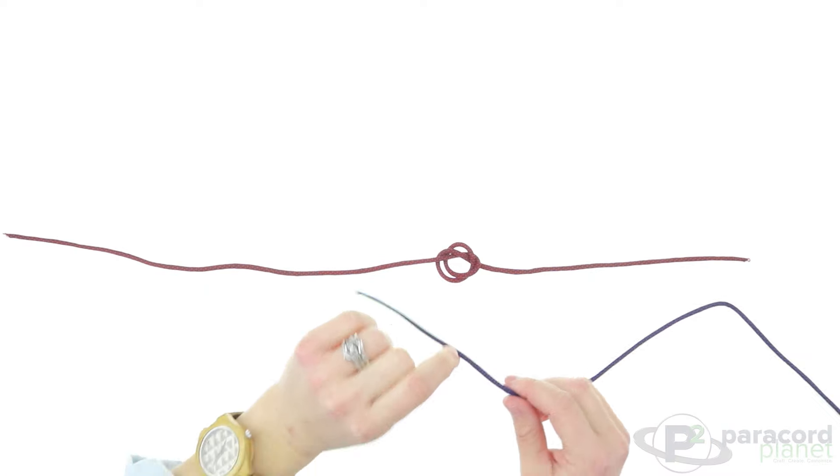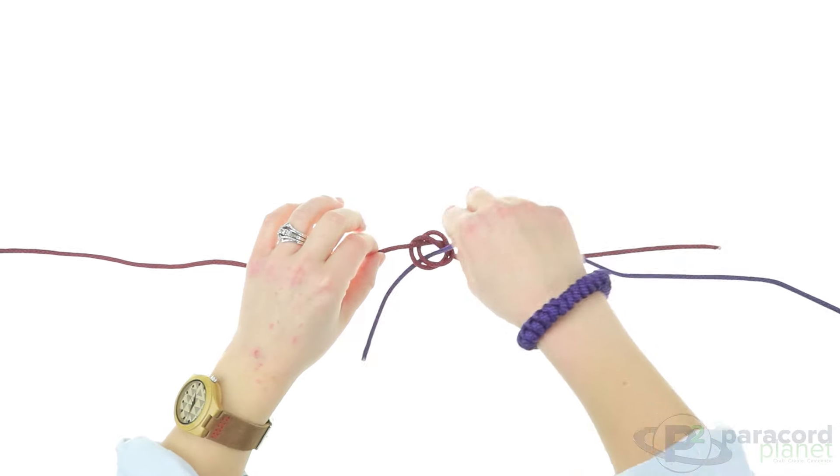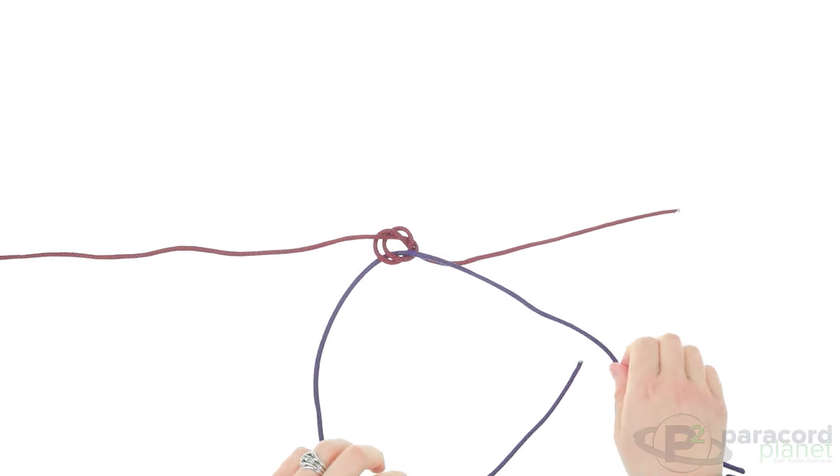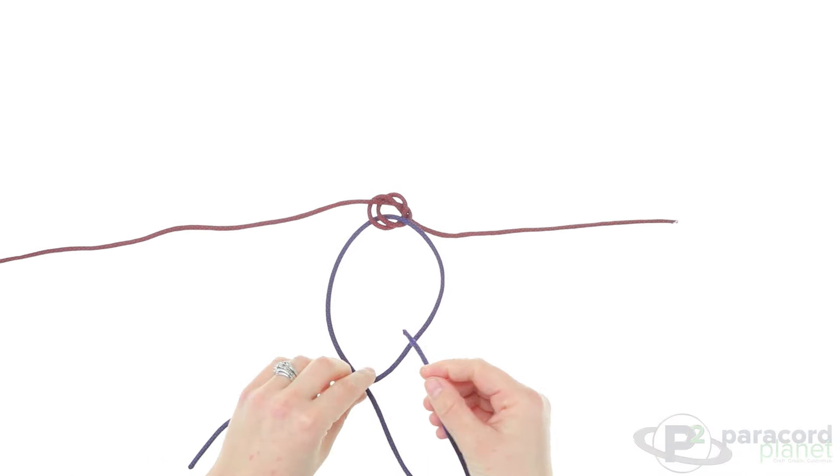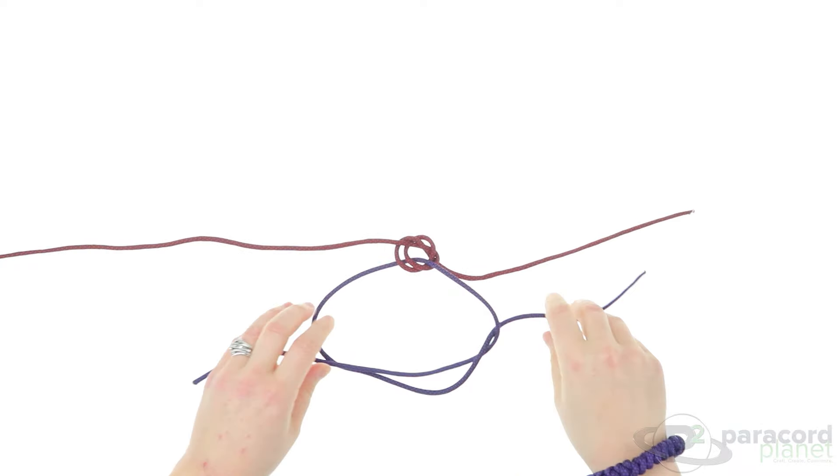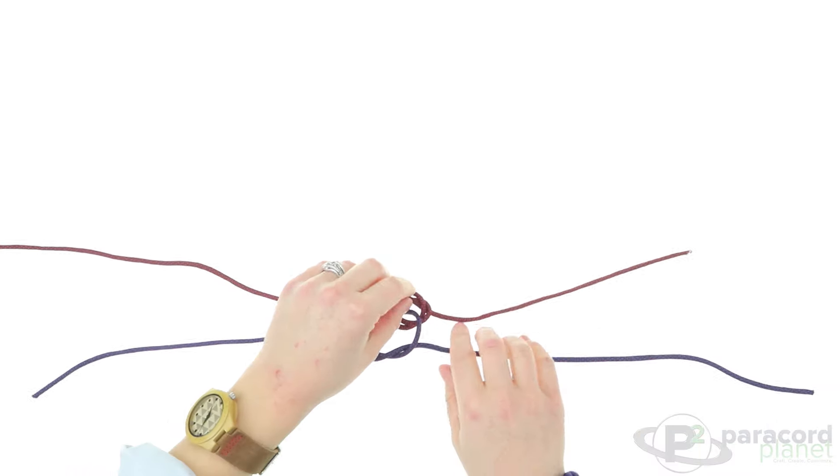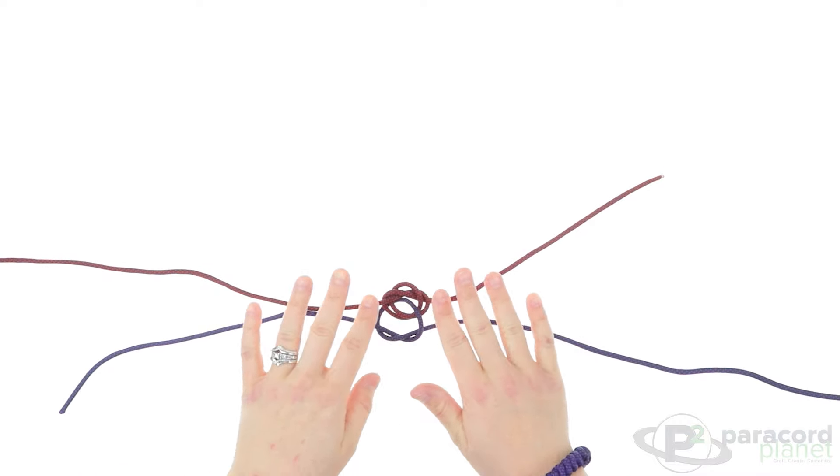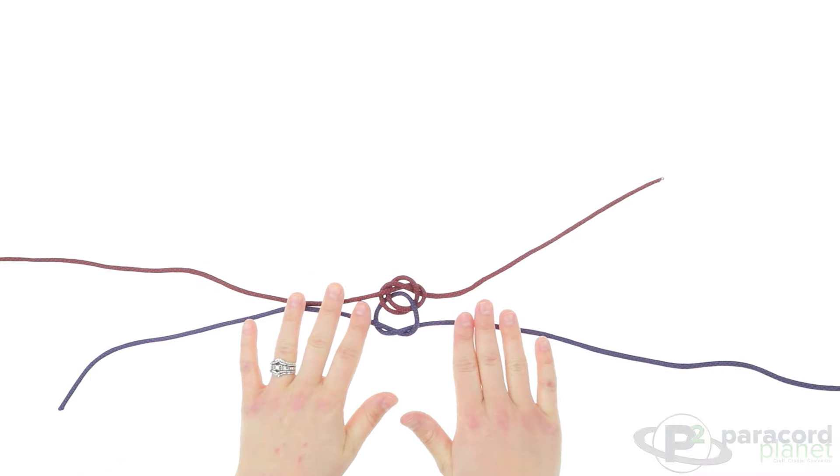Now with your second cord, go down through the center of the knot that you already did, then make another little knot here just like that. Again, the smaller the knot you make, the easier it will be to adjust later when we finish.